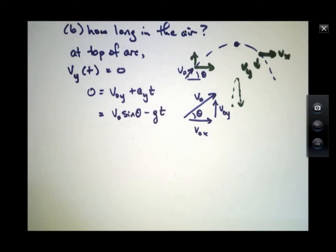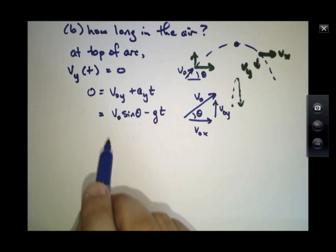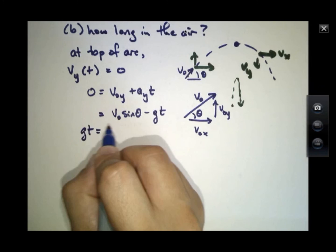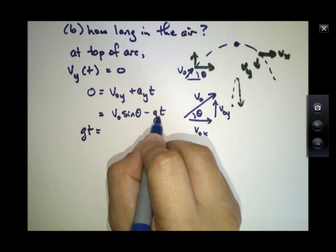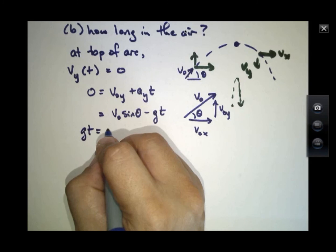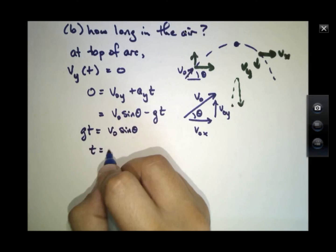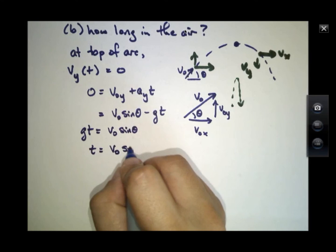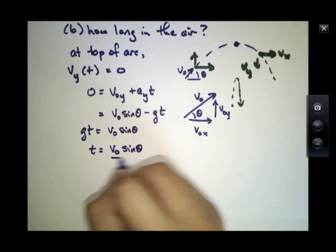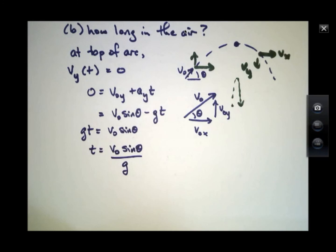The acceleration in the y direction is minus G. And now I have a simple expression. V-naught sine theta minus GT is zero. Or the time that it spends going up. It's just that.